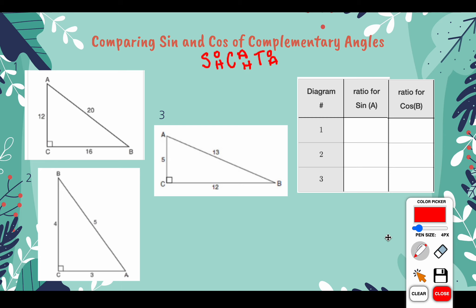When we're trying to find the ratios for our trig functions, we want to label our reference angle. First, I'm going to do the ratio of sine of A. Remember, sine of A is opposite over hypotenuse, so I'm going to label my sides first. This would be opposite, this would be hypotenuse, this would be adjacent. So for my ratio of sine of A, that's going to be opposite over hypotenuse, which would be 16 over 20.